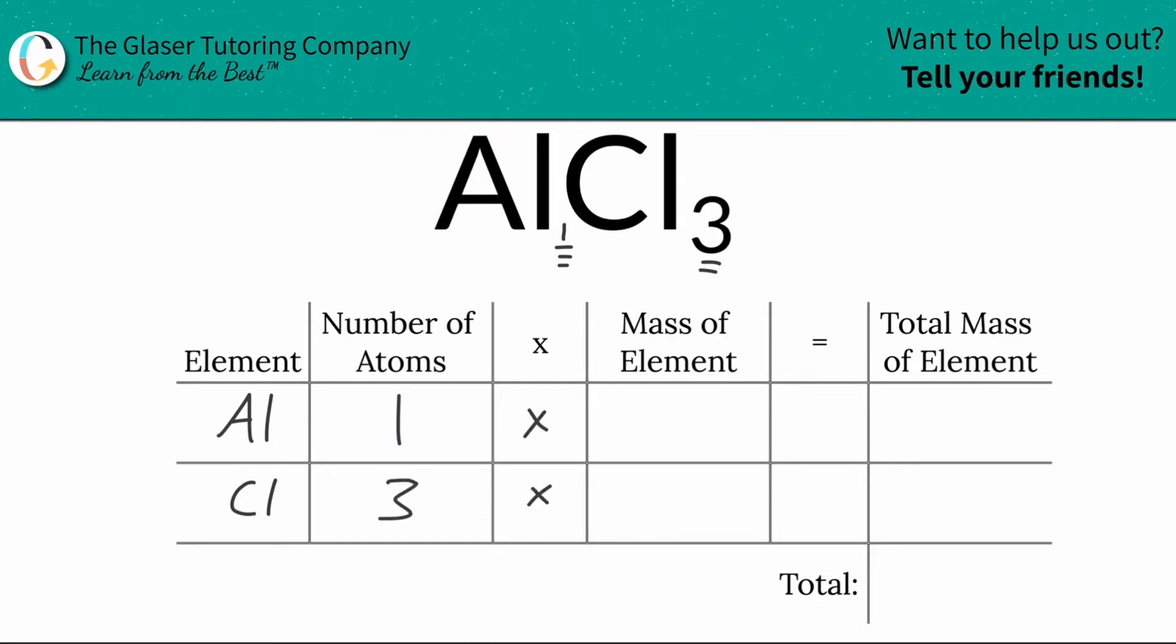Next thing is I'm going to multiply those values by the mass of each particular element. And these masses are found on the periodic table. Let's check it out.